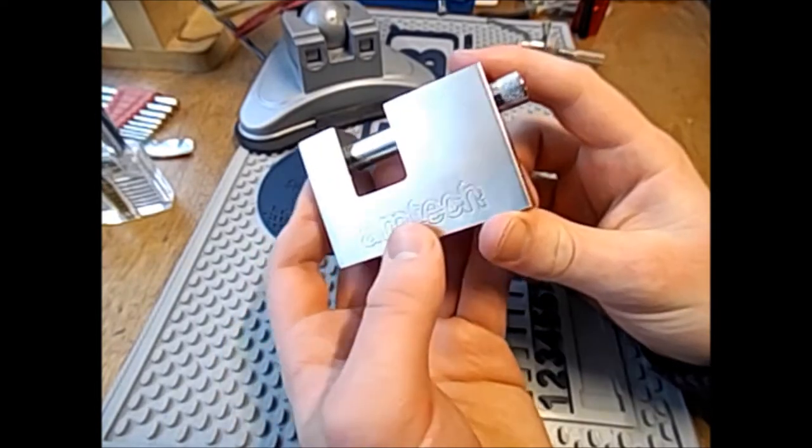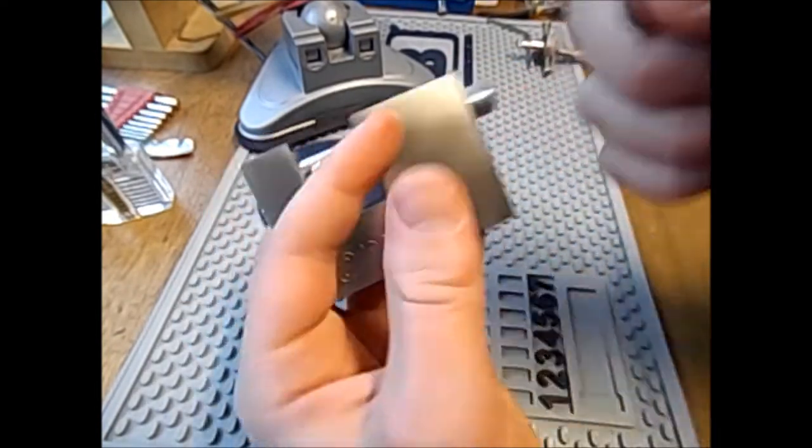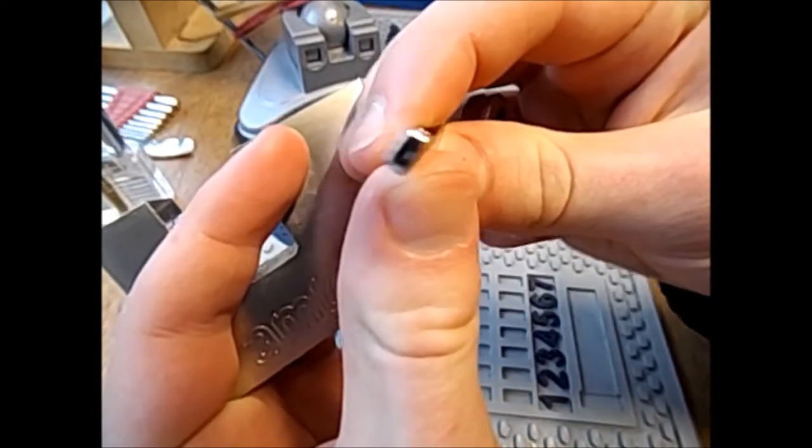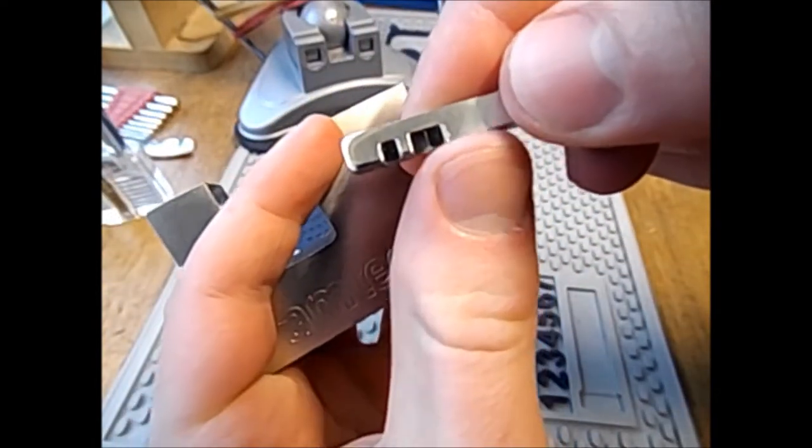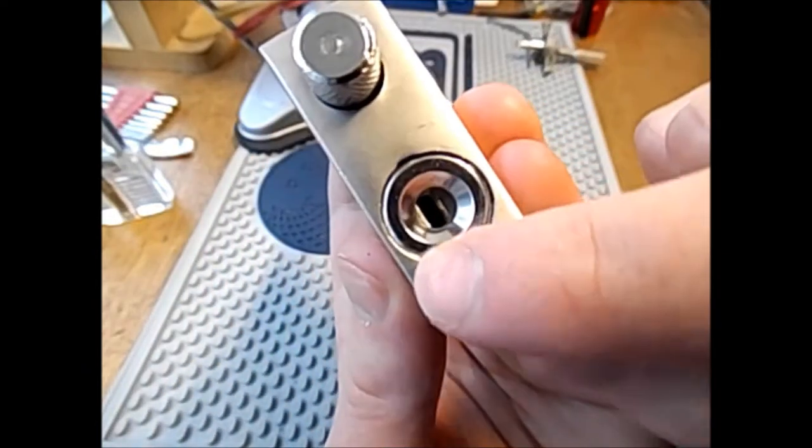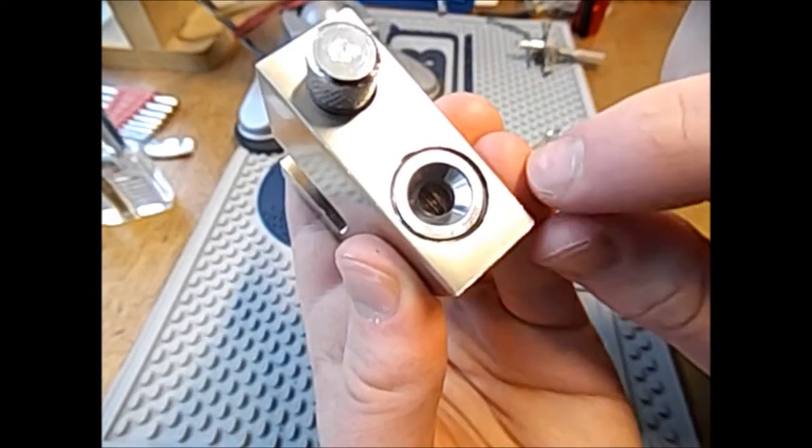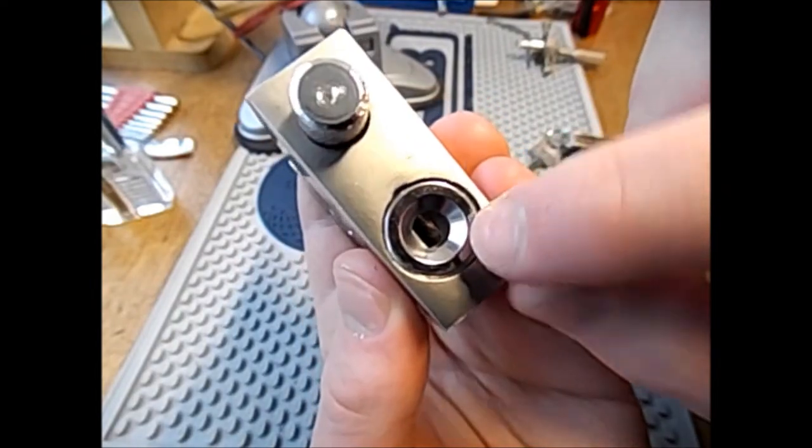So you can identify a disk detainer lock by its key. As you can see, it's sort of rectangular shaped on the end and we have all these angled cuts. Inside we've got quite a wide open keyway and inside we've got a series of disks.